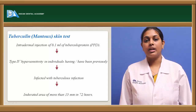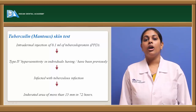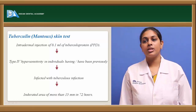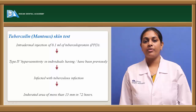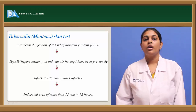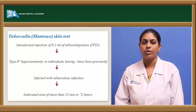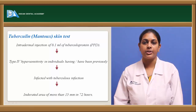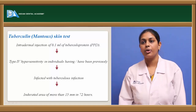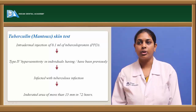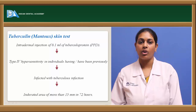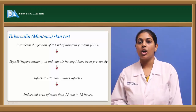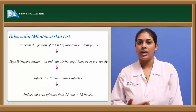Coming to the tuberculin or Mantoux skin test: tuberculin protein, referred to as PPD (purified protein derivative), when intradermally injected — 0.1 ml — into the patient, results in Type 4 hypersensitivity in individuals. This is known as delayed type hypersensitivity. The tuberculoprotein is derived from attenuated Mycobacterium tuberculosis bovine species. It is injected into the patient usually at the forearm site, in the superficial layers of the epidermis.